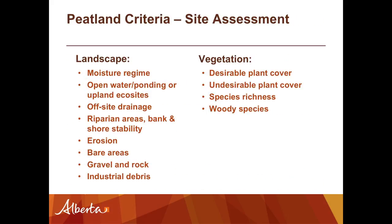When you look at the criteria, you're going to see two steps to the assessment. Most other criteria have three steps: landscape, vegetation, and soil. The peatland criteria don't have a soil component — just landscape and vegetation. In the landscape portion, we're really focusing on what's happening with the hydrology. A key factor in getting peat species back on the site is to have the water table at the right place — soil saturated, but also creating a bit of an aerobic zone.